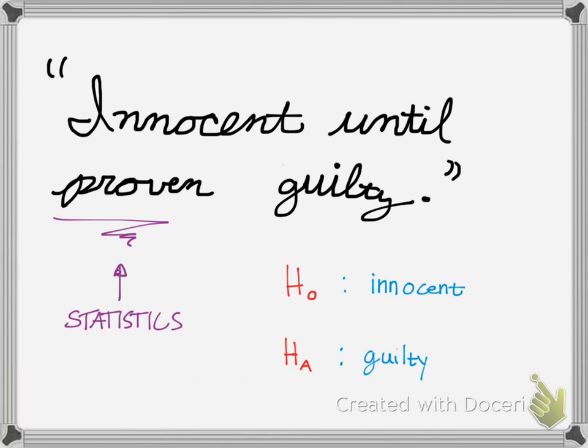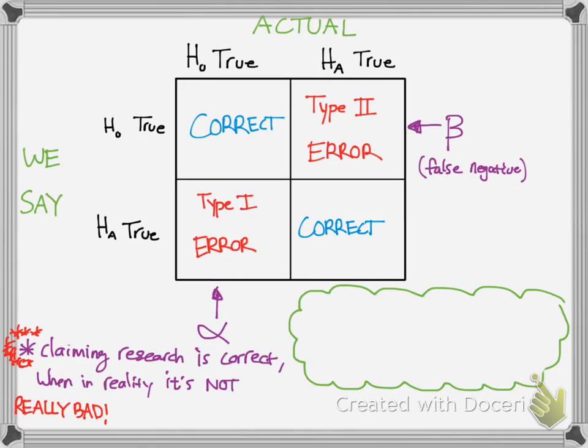Now going back to this innocent until proven guilty. How does that relate here? If you're still not grasping it, hopefully this will hit it home for you. We have type 1. What would that be? Type 1 is saying that you are guilty, but you're really innocent. That's the worst thing. Like you were innocent of a crime, but the legal system provided some sort of evidence that made you appear guilty. That's not what we want to do. That's what we're trying to minimize. That's the worst thing possible. You don't want to send an innocent person to prison. That's bad. That's really bad. So that's that type 1 error, which again is the worst you can have of the two.